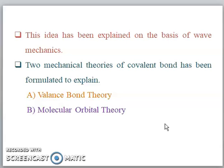The idea has been explained on the basis of wave mechanics. Covalent bonding is explained by two theories developed using wave mechanics, which we are going to see in next slides. The first one is the valence bond theory and the second one is the molecular orbital theory.